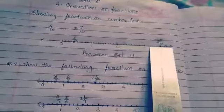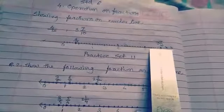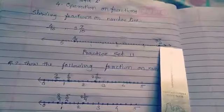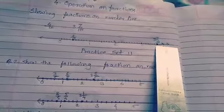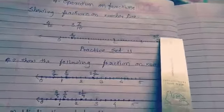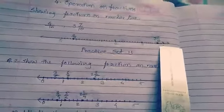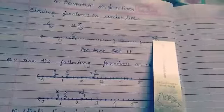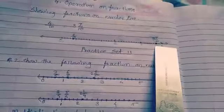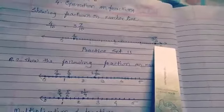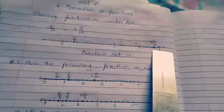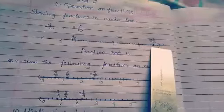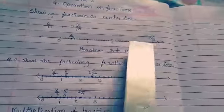Counting from that point: 1, 2, 3, 4, 5, 6, 7 — so this is the point. 7 upon 10 is here. Darken that point. And so, we have shown both fractions on the number line.